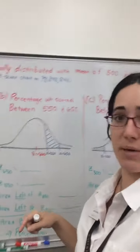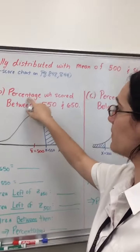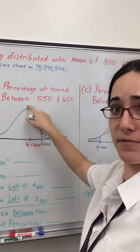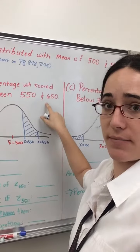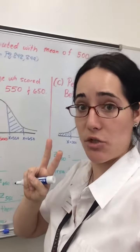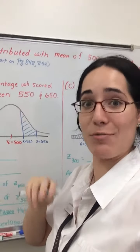All right, next up, we go to Part B. It says, find the percentage you scored between 550 and 650. Here we have to find two z-scores, look up two areas, and subtract the difference.